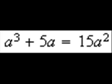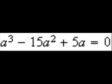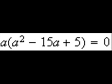Problem number 5 on page 312. a cubed plus 5a equals 15a squared. We first need to get 0 on one side, so we subtract 15a squared from both sides. Then factor out the common factor of a.